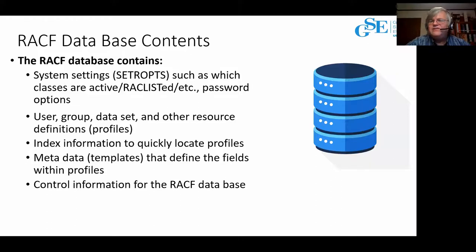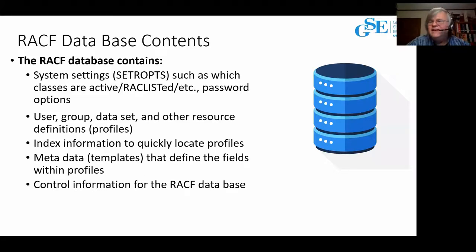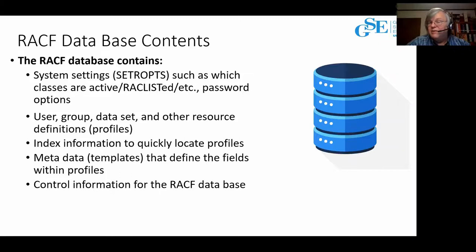What's in the RACF database? All the RACF configuration options set with SETROPS - the set RACF options command - such as what classes are active, what classes are RACListed, logging options, password rules; all that is in the RACF database. Then all the profiles - user, group, dataset, general resources, connections - also in the RACF database. On top of that, there's an index structure so RACF can quickly find profiles of interest. There's also metadata: the RACF templates define all the fields in all the profiles, which we ask you to update periodically when new fields are introduced, usually every release. There is also control information - counters we use to manage caches - and we'll spend time discussing that.